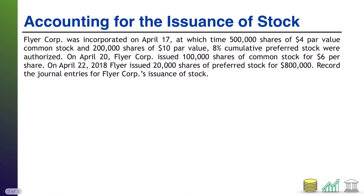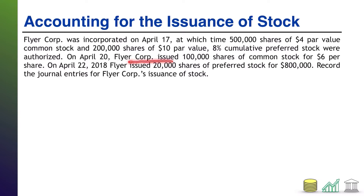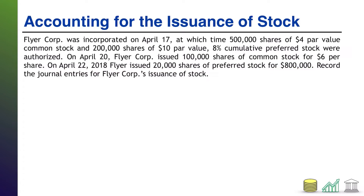So here it is. FlyerCore was incorporated on April 17th, at which time 500,000 shares of $4 par value common stock and 200,000 shares of $10 par value 8% cumulative preferred stock were authorized. On April 20th, FlyerCore issued 100,000 shares of common stock for $6 per share. On April 22nd, FlyerCore issued 20,000 shares of preferred stock for $800,000. Record the journal entries for the issuance of stock.